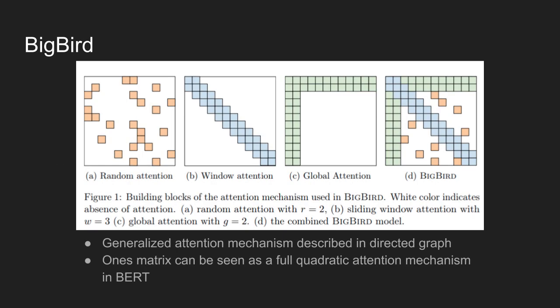In Big Bird, generalized attention mechanism is described by a directed graph. To simplify the description of the method, authors use adjacency matrix of the graph. The figure shows different adjacency matrix presented in the paper. The matrix is of size n by n, where n denotes the number of input tokens.